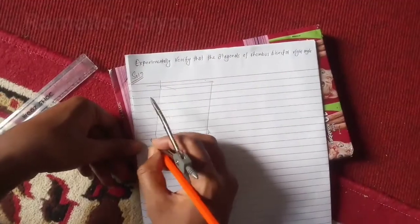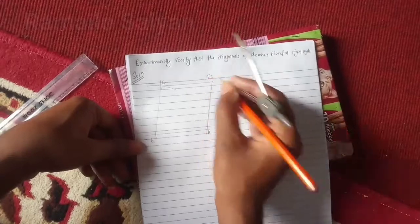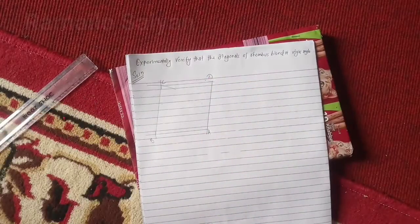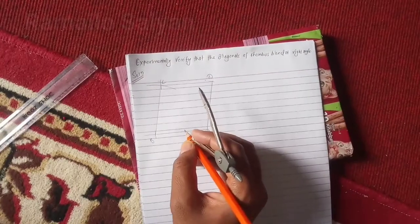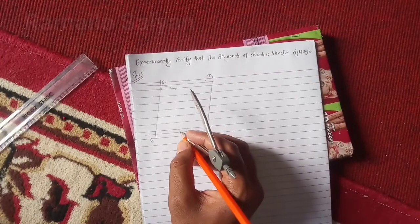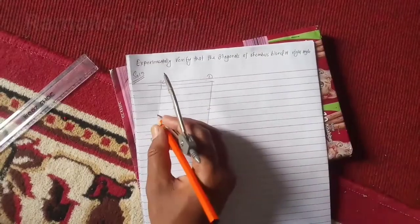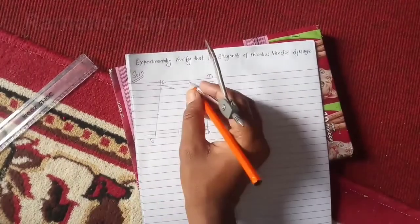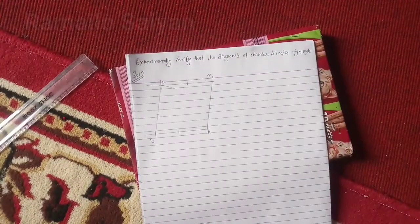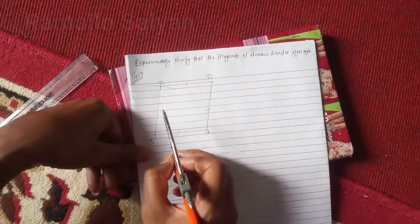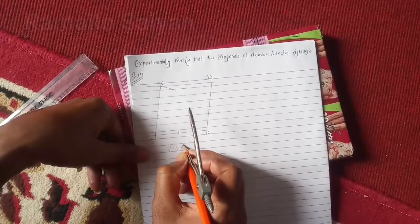These points are B, C, and D. So A, B, C, D is a rhombus. In a quadrilateral, if all sides are equal, it becomes a rhombus. In this way, construct the next figures.